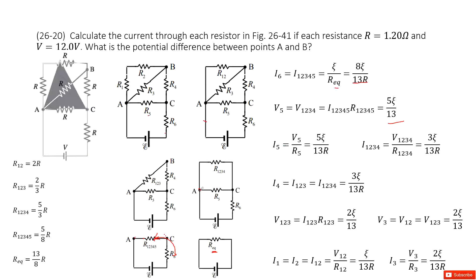Now we have the voltage from point A to point C. We can get current I5 as V5 over R5, and I1.2.3.4 as V1.2.3.4 over R1.2.3.4. Since R1.2.3.4 is a series connection from A to C, I4 equals I1.2.3 equals I1.2.3.4, which equals 3 epsilon over 13R.